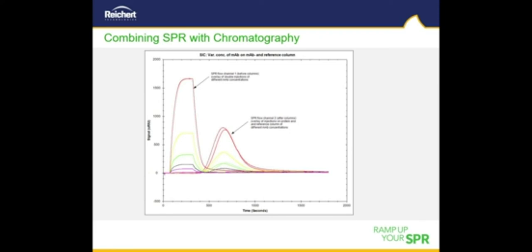Here we show some preliminary results with this setup. The same monoclonal antibody that is coated on the interaction column is injected as analyte. Initial overlaid sensorgrams show typical concentration-dependent signals on the first SPR flow channel before the protein contacts either the MAb-modified column or reference column. Hence, the first flow channel of the SPR serves as a pre-column detector and shows no deviation for replicate injections.